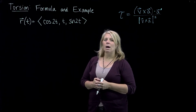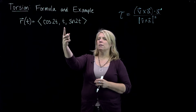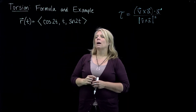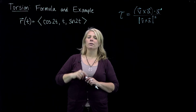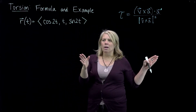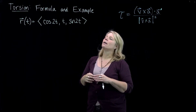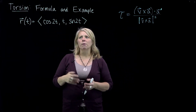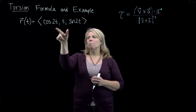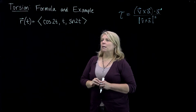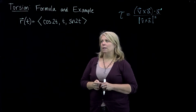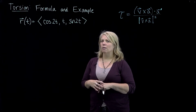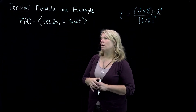This is a helix of radius 1 with evenly spaced coils going in the direction of the positive y-axis. The y-component is an increasing function of t at a constant rate — dy/dt equals 1 — so the coils have constant change in y, giving evenly spaced coils. The radius is 1 from the amplitude of the two trig functions. The period of those trig functions is pi, meaning an interval of zero to pi takes you one full revolution around the helix.